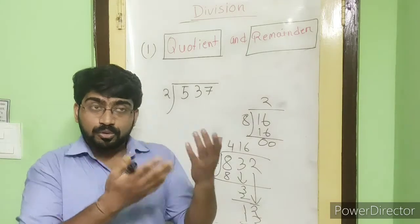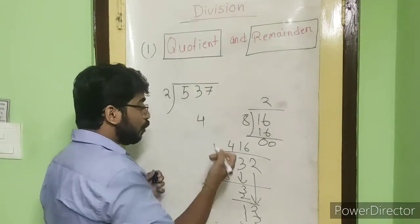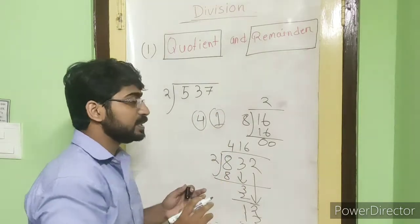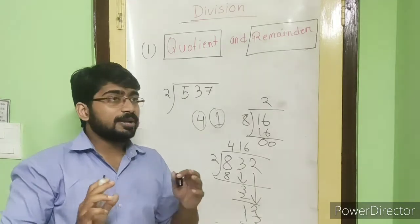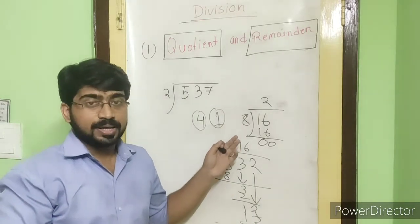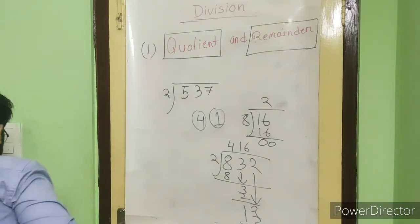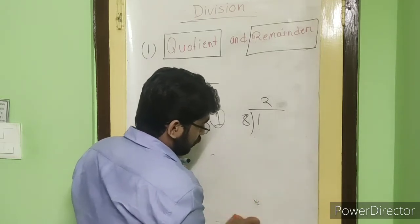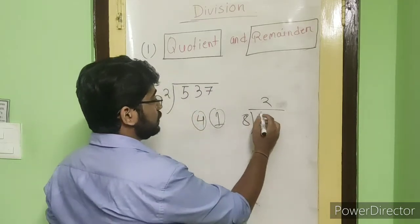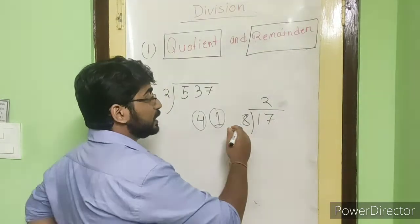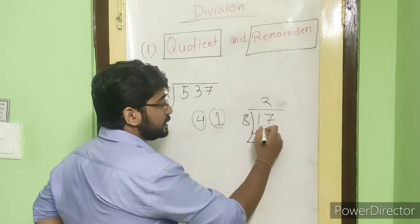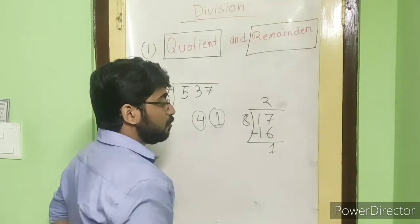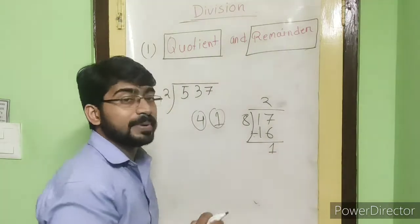But some divisions will have cases where you will not get zero. In those numbers you may find 4, or you may find 1. Suppose if I write 17 instead of 16: 8 into 2 is 16, and 17 minus 16 is 1. So this 1 will be the remainder.